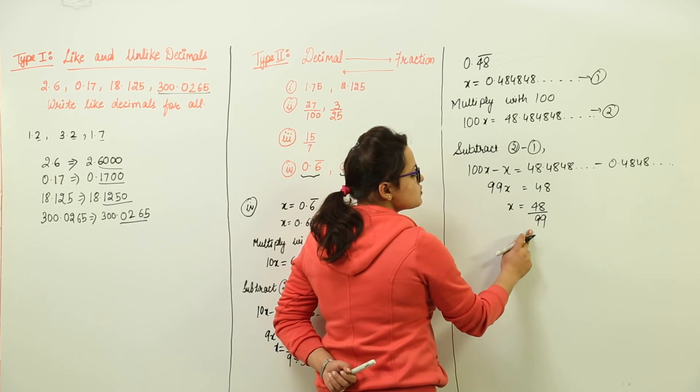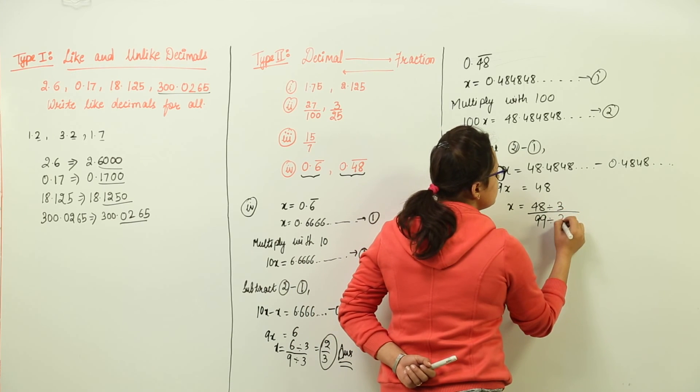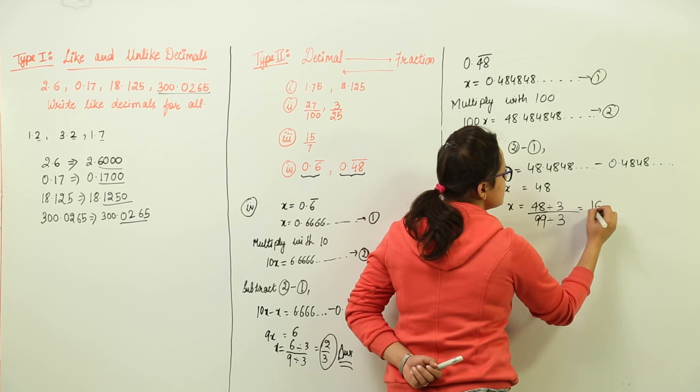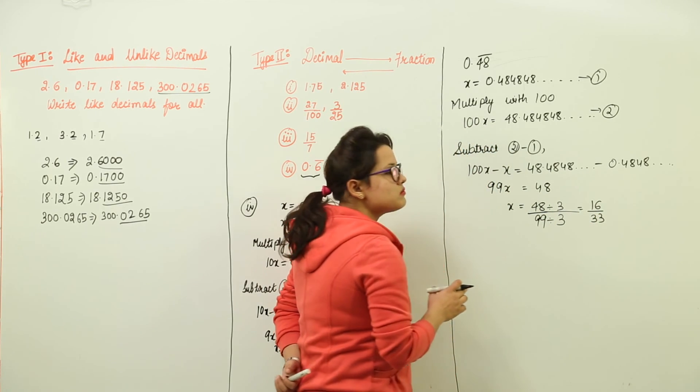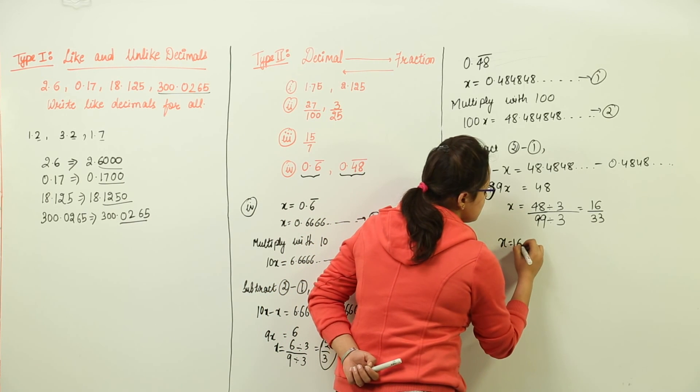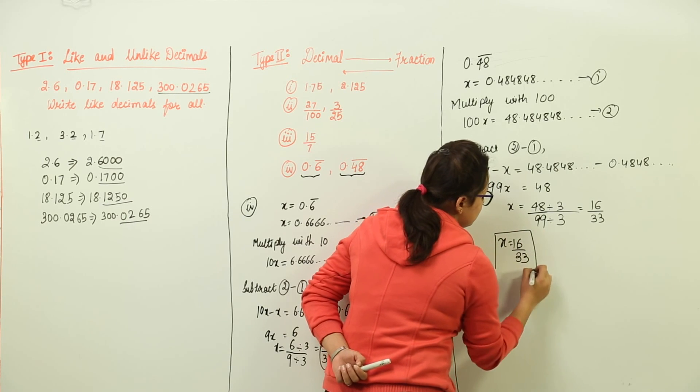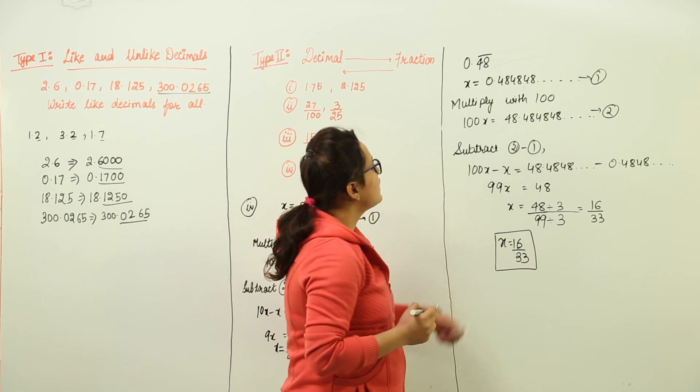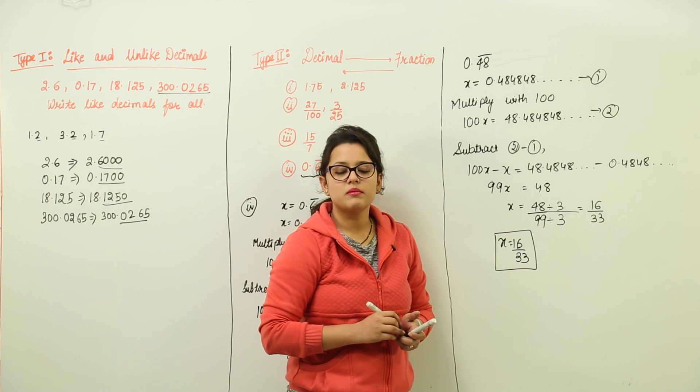If possible, you can solve it further. Yes, we do have the factors common that is 3. So on solving, we get 16 upon 33. Now this is the maximum possible or you can say the lowest form. So we leave the answer as it is, that is x is equal to 16 upon 33. That means the decimal we had 0.48 represented in the form of 16 by 33.